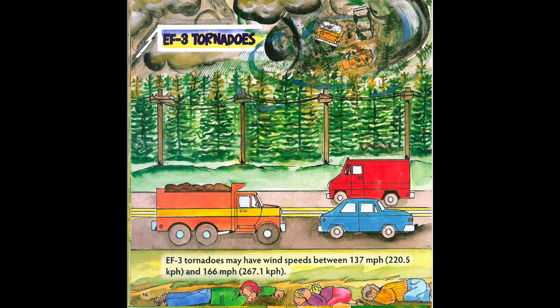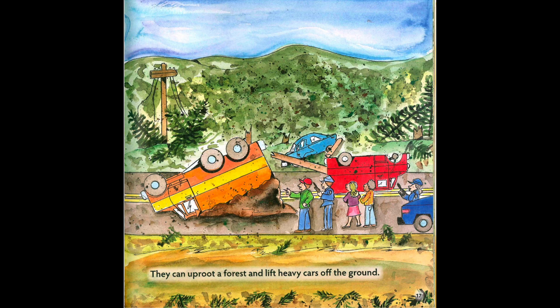EF3 Tornadoes may have wind speeds between 137 miles per hour (220.5 kilometers per hour) and 166 miles per hour (267.1 kilometers per hour). They can uproot a forest and lift heavy cars off the ground.